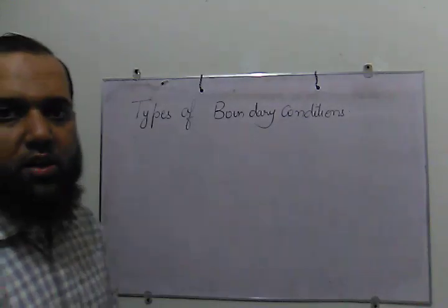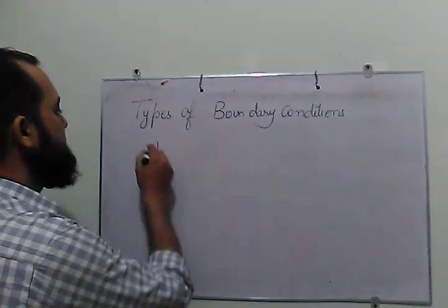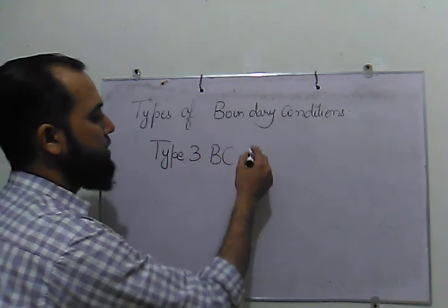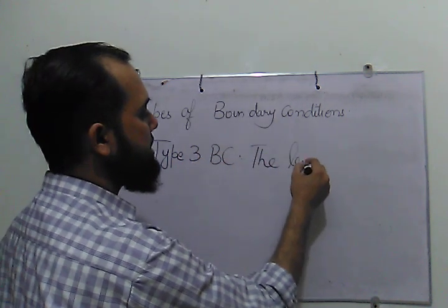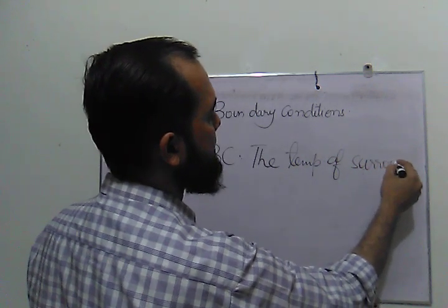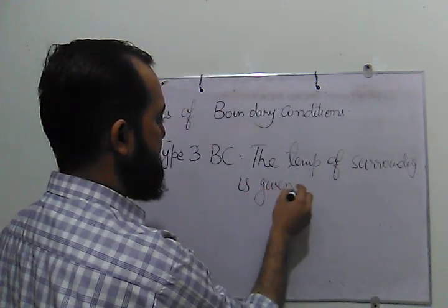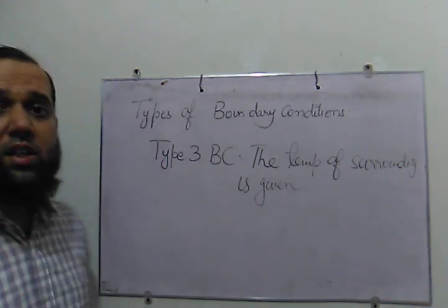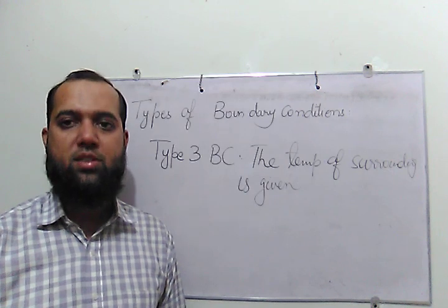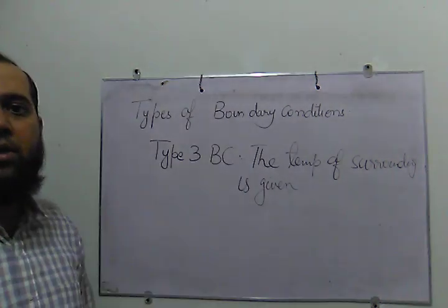Then we have type 3 boundary condition, which we are not going to solve in this course. In type 3 boundary condition, the temperature of the surrounding is given, which is a little complicated to solve because it has some other kind of equation. But we are not going to discuss it here. So this is type 3 boundary condition.